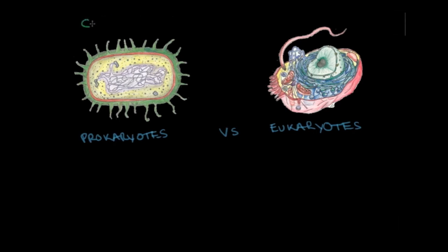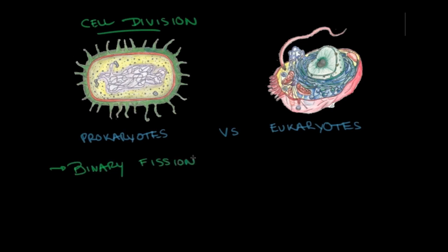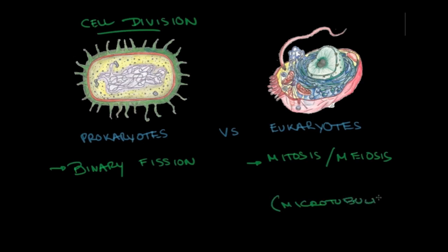For cell division, in prokaryotes we see a process called binary fission, in which chromatids are separated by attachment to the plasma membrane — this is how one prokaryotic cell becomes two. In eukaryotes, you have mitosis and meiosis, where chromatids are separated by the spindle apparatus, which is comprised of microtubules. We'll go into more detail in a later tutorial.